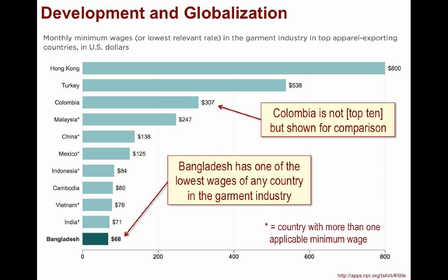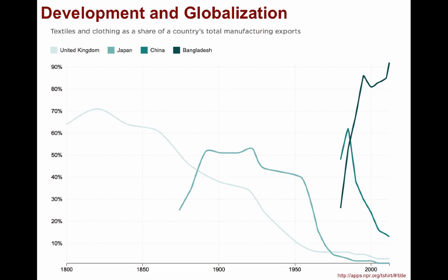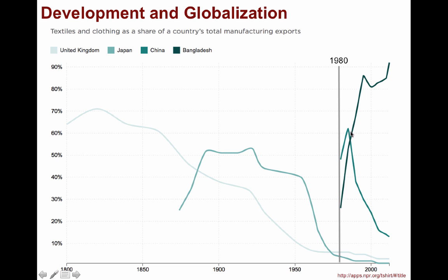Bangladesh has the lowest wages of all countries on this chart. Looking at this graph, which shows textile exports as a country's total manufacturing exports, it is no surprise the U.K. had the early start. However, once Japan industrialized, they became a major exporter of textiles, primarily due to their cheap labor and improvements in transport technology through the use of steamships. Some of this data only began in 1980, around the start of the post-Fordist era and the beginnings of the new international division of labor. China's exports were mostly textiles into the 1990s, but since then China has diversified greatly.